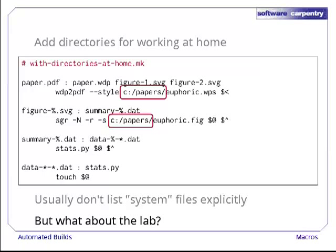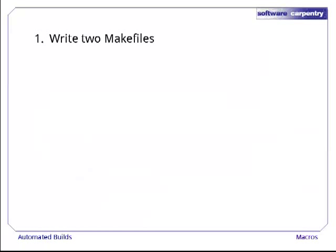But back to our problem. How do we handle the fact that these two paths need to be different when we're recreating our paper in the lab? The first option is to use copy and paste and write two completely separate makefiles. What we really mean, though, is write and maintain — and that's why this is a bad idea. As soon as we have two of anything, we'll eventually update one but forget to update the other. Makefiles are already hard enough to debug, and any solution that adds more complexity and risk isn't really a solution at all.